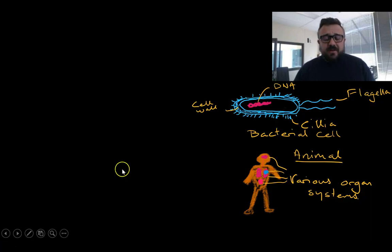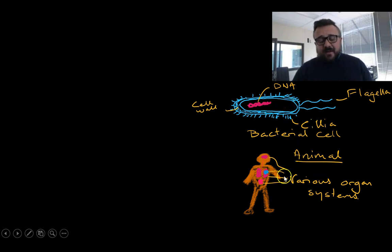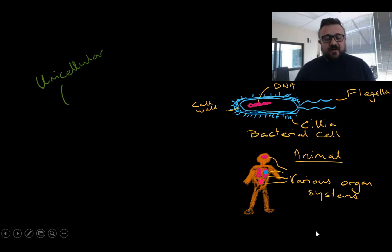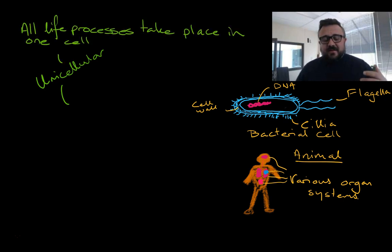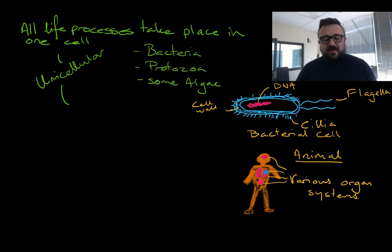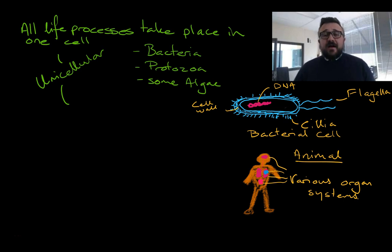Here we have a unicellular, or single-celled organism, which is a bacteria. And an animal — looks a lot like us, maybe it's a chimpanzee — which is a multicellular organism. Unicellular means all of life's processes take place in the one cell. This can include things like bacteria, protozoa, and some algae. Algae are water-based plants — some are multicellular, some are unicellular.